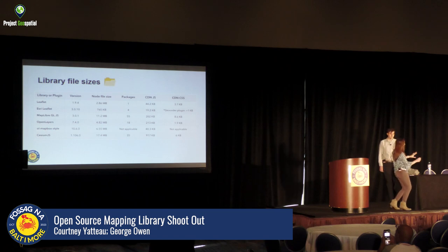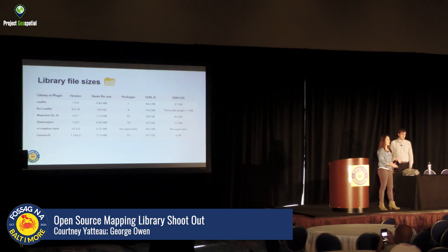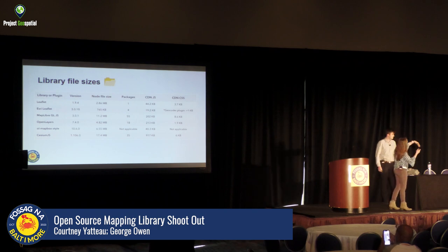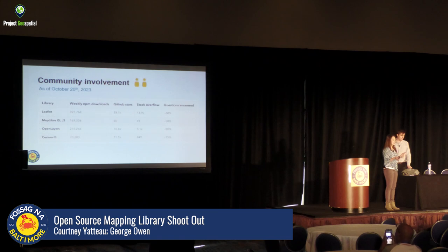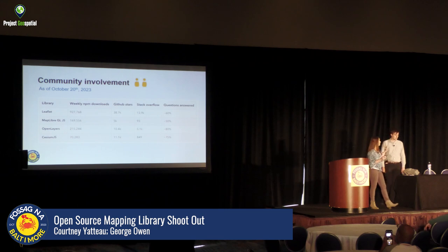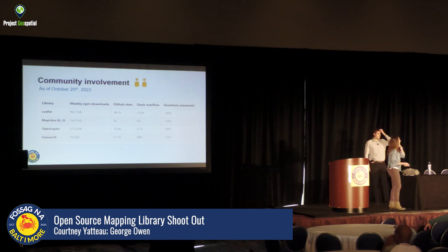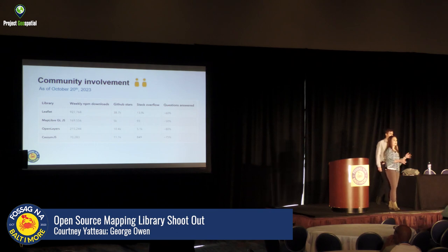On to library file sizes — Leaflet is the smallest and lightest weight. MapLibre and OpenLayers are roughly equivalent, and Cesium is larger, which makes sense as a 3D library. For community involvement, Leaflet is the most active, but really all of them are very active. If you have questions you can go to Stack Overflow, GitHub, or other community spaces and should be able to get answers.